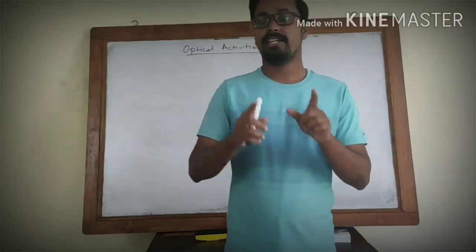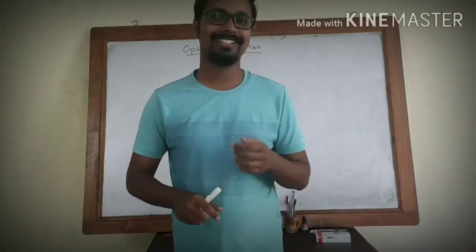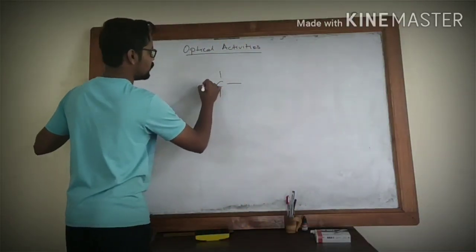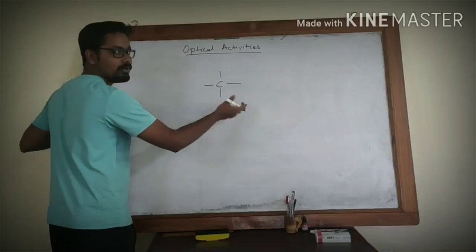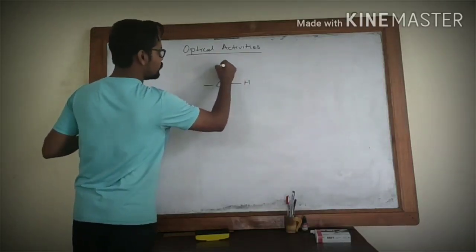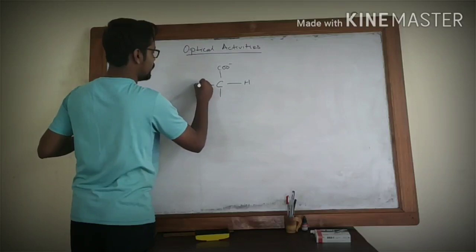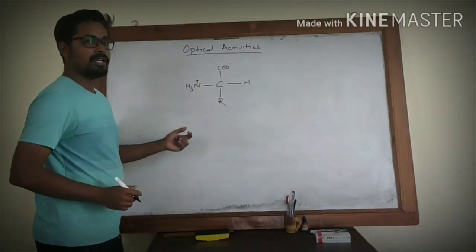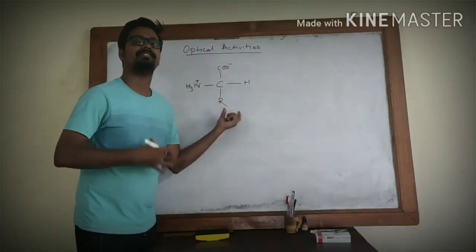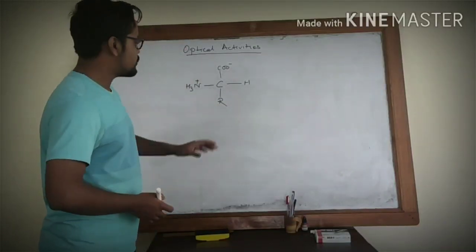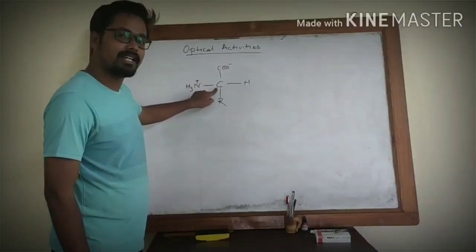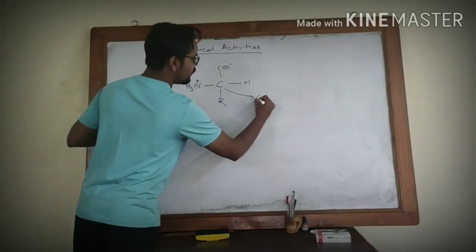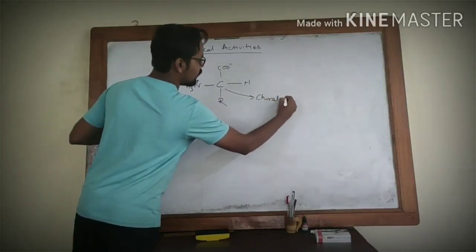I mentioned that the central carbon of the amino acid is a chiral carbon, which means that the central carbon forms four bonds with different groups: one nitrogen, one carboxyl group, one amino group, and one side chain (R-group). This side chain is different for different amino acids. Since the central carbon is attached to four different groups, it is called a chiral carbon.